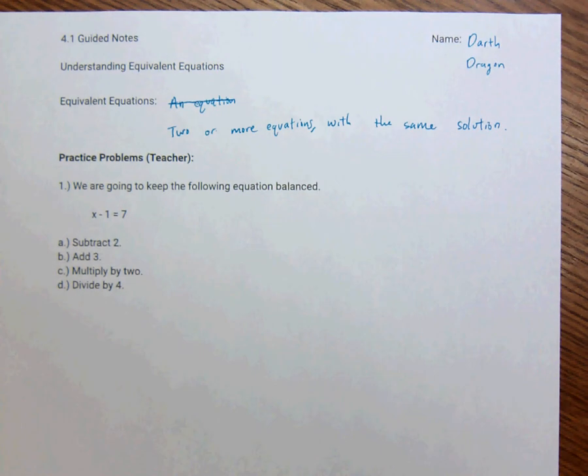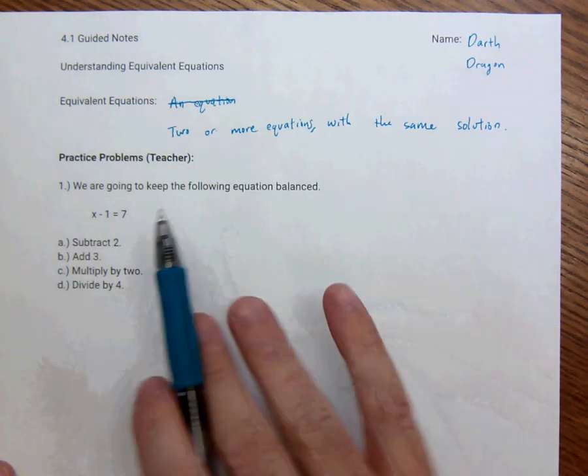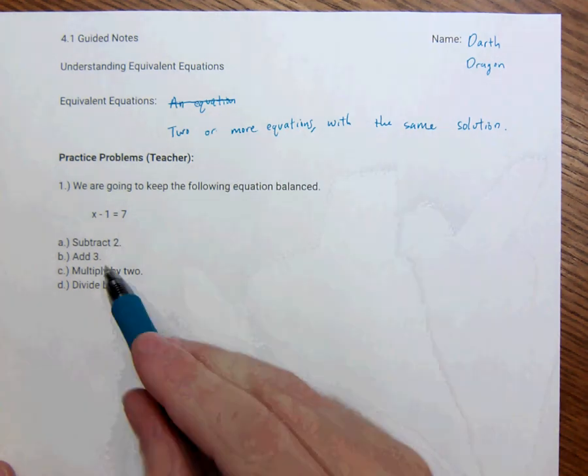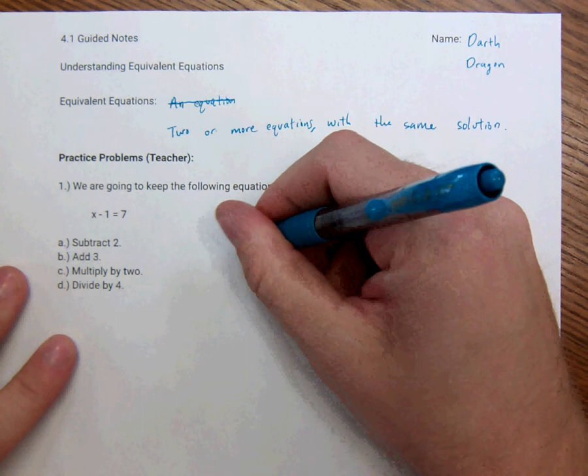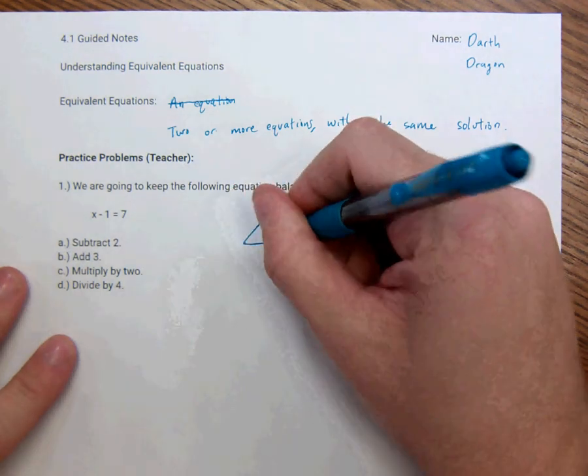Equivalent equations are two or more equations with the same solution. So, basically, and we'll get to that down here, but right here I just want to talk about keeping the equation balanced. So what I mean by that is, think of the equal sign as like the scales of justice right here.